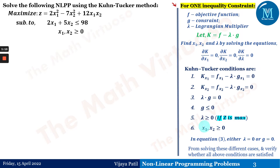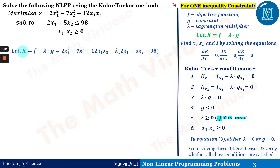The reference question is: find or solve the following NLPP using the KKT condition or method. Maximize Z = 2x₁² − 7x₂² + 12x₁x₂, subject to the constraint 2x₁ + 5x₂ ≥ 98, and x₁, x₂ ≥ 0. First, we define K = f − λ·g.